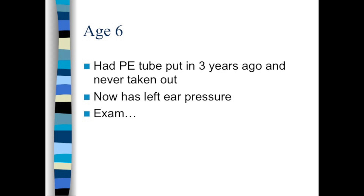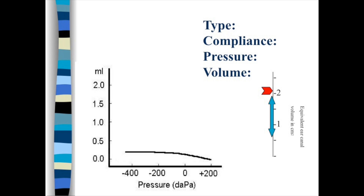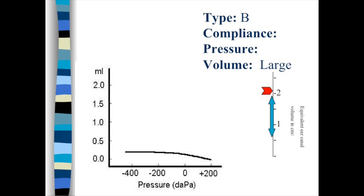Now the child is age 6. He had the PE tubes put in 3 years earlier and they've never been taken out. He's complaining of pressure in the ear. The tympanogram shows a flat line with high canal volumes, which tells us that the tympanic membrane tube is patent.